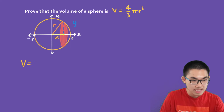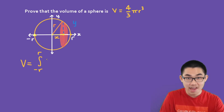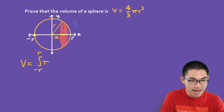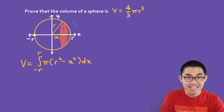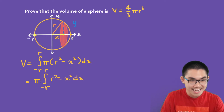The volume equals the integral from negative R to R, because we want to find the volume from here to here — this is negative R and that's R. The area formula we just found was pi times R squared minus x squared, dx. Since pi is just a number, we can bring it out of the integral: pi times the integral from negative R to R of R squared minus x squared dx. Let's solve this together.